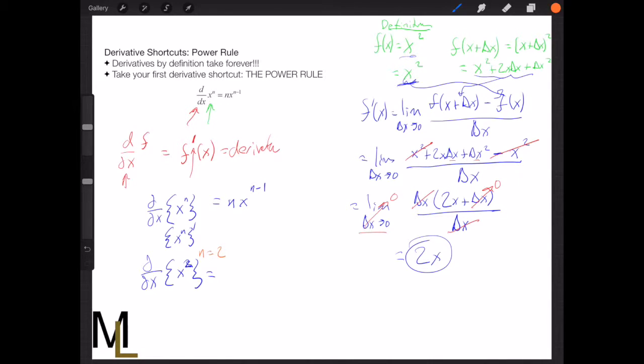So everywhere there's an n in this equation, we're going to want to put a 2. So we get 2, and we get x, and then up here there's an n minus 1. So n minus 1 would be 1.